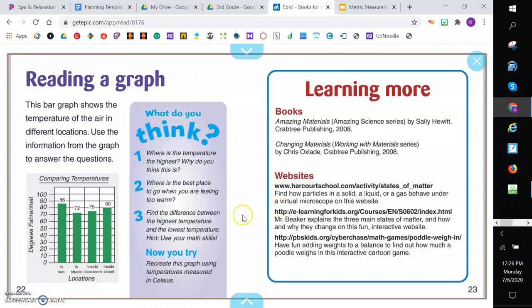Reading a graph. This bar graph shows the temperature of air in different locations. Use the information from the graph to answer the questions. So this is optional. If you want to pause the video, you can absolutely do this. You're answering the questions, where is the temperature the highest? And the locations are listed down below. Where is the best place to go when you are feeling too warm? Find the difference between the highest temperature and the lowest temperature.